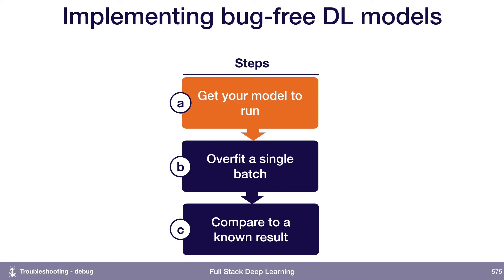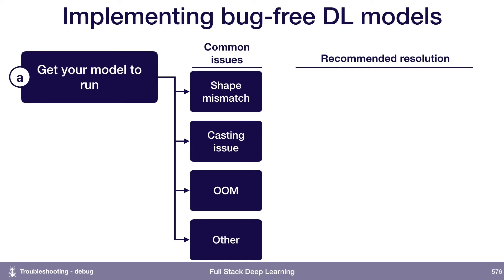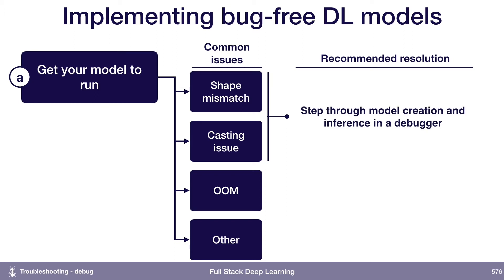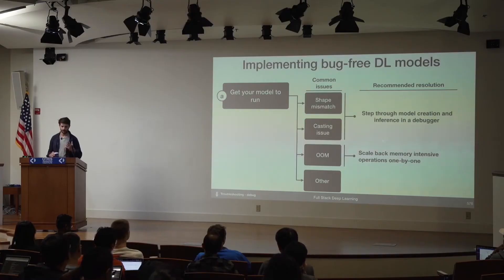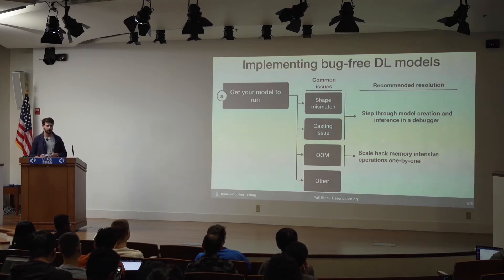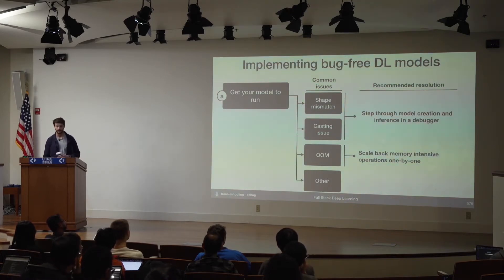The first thing you need to do is get your model to run at all. A few things could prevent this. One common issue is a shape mismatch or a casting issue. The way to address these is to step through your model creation step-by-step in a debugger, checking whether tensors are the right shapes and data types at each point. Out-of-memory issues can be difficult to debug — try scaling back memory-intensive operations one by one, or reduce your batch size by half.